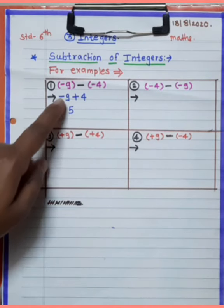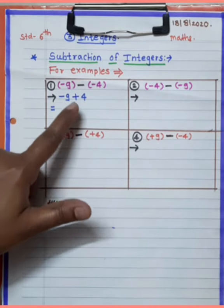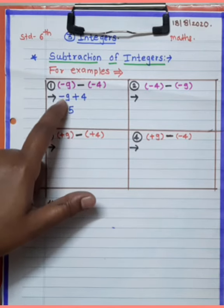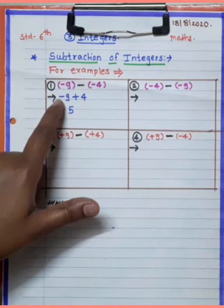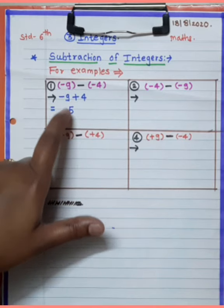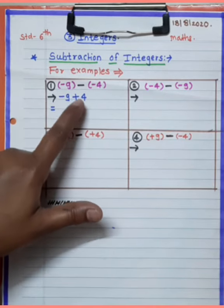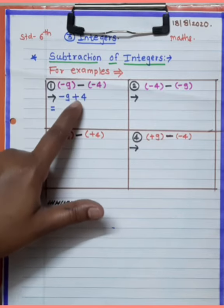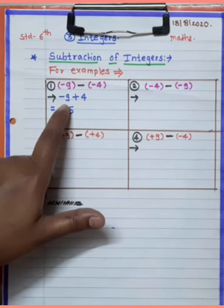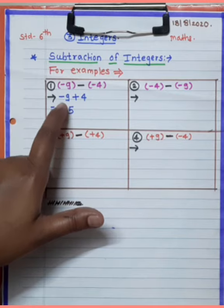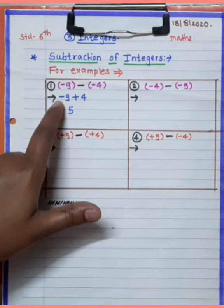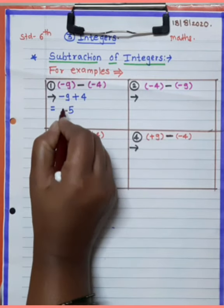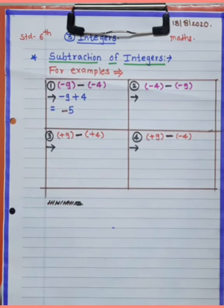9 minus 4 equals 5, and we take the sign of the bigger number. One negative and one positive number are here. The plus minus minus equals minus. Since 9 is greater than 4, the sign of the bigger number applies, so the answer is minus 5.